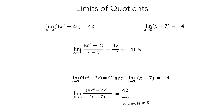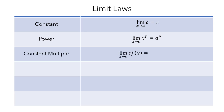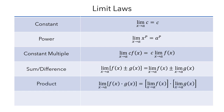So now we've looked at a bunch of laws for evaluating limits of functions. This table summarizes all of the limit laws. The constant law states that the limit of a constant is the value of the constant. The power law states that the limit of x to a positive integer power is what you get when you plug in the value that x is approaching. The constant multiple law states that the limit of a constant times a function is the constant times the limit of the function. The sum law states that the limit of a sum is the sum of the limits, and this also works for differences. The product law states that the limit of a product is the product of the limits. And the quotient law states that the limit of a quotient is the quotient of the limits, provided that you are not dividing by zero.